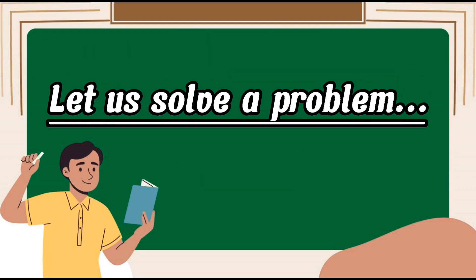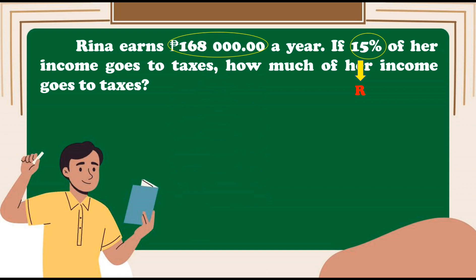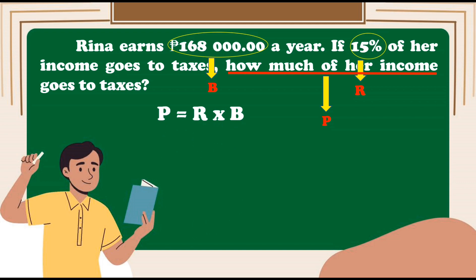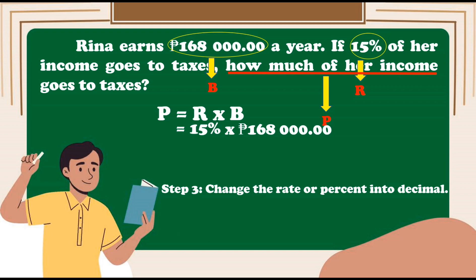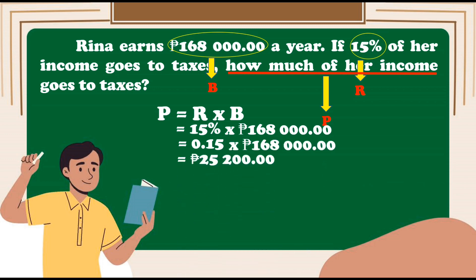Let us try a word problem. Rina earns 168,000 pesos a year. If 15% of her income goes to taxes, how much of her income goes to taxes? First step: identify the missing term. The value with a percent sign is the rate, and 168,000 pesos is our base. We are finding the percentage. Second step: write the formula — Percentage is equal to rate times base: 15% times 168,000 pesos. Third step: change the rate to decimal — 0.15 times 168,000 pesos. The answer is 25,200 pesos. Therefore, 25,200 pesos of Rina's income goes to taxes.